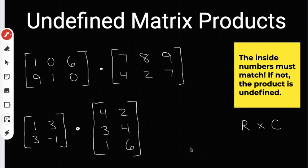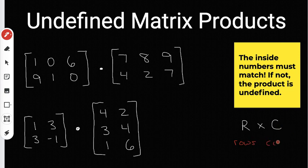We're going to be doing undefined matrix products. Whenever you multiply matrices together, you're going to want to know what the dimensions are before you get started. Here, R stands for rows and C stands for columns. So what we do before we start multiplying is we look at the matrix and ask how many rows does it have and how many columns does it have?